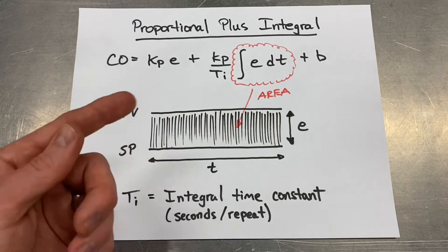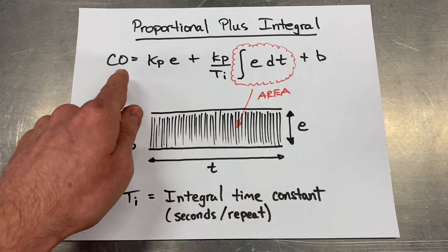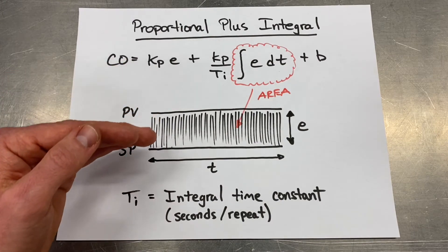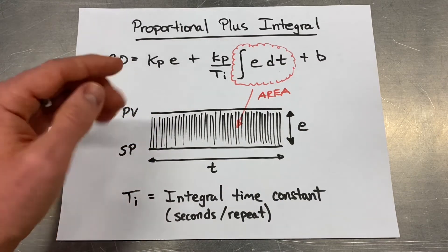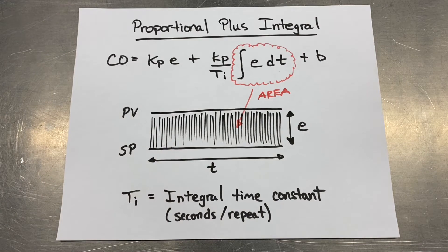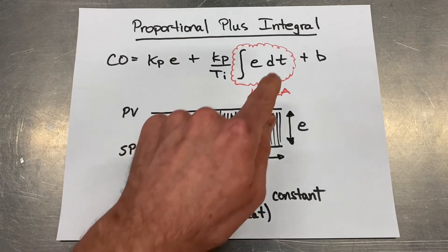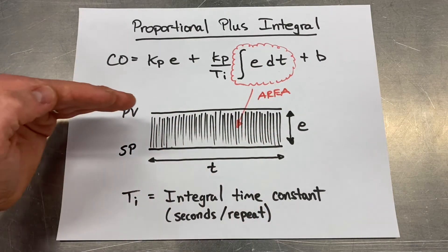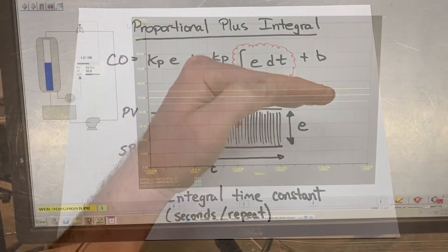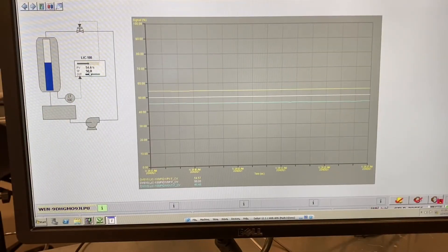And that's what the definition of an integral is, it's area under the curve. More and more area accumulating gets added on to our controller output and it's going to cause our valve to move constantly until this error here disappears. Once the error disappears, it's just going to save the total accumulated area and the controller output will just flatline at a new value. So watch what happens when I turn on integral.